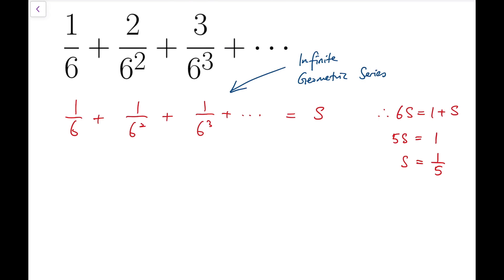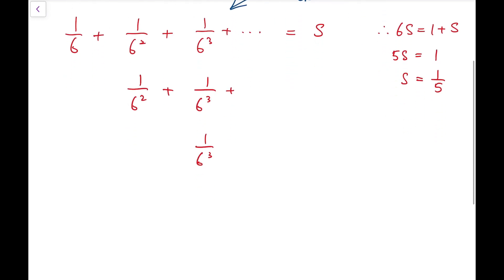So the trick is, I'm going to split our original series into the following. So the first term is still 1 over 6, while for 2 over 6 squared, the second term, I'm going to split it into 2 times 1 over 6 squared. So we can imagine, I'm going to do the same for 4 over 6 to the 4, I'm going to split it into 4 terms.